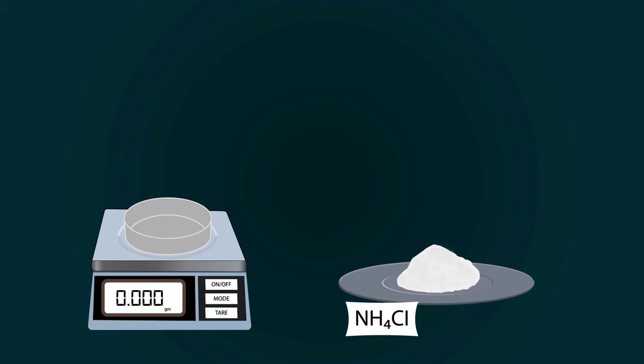Now add ammonium chloride into the petri dish with the help of a spatula. Weigh precisely up to 16.9 grams.